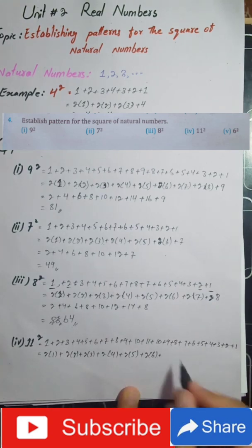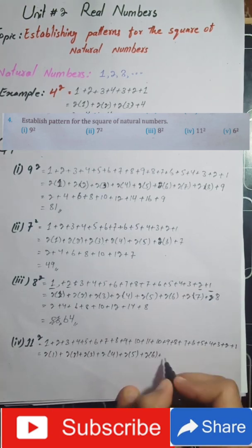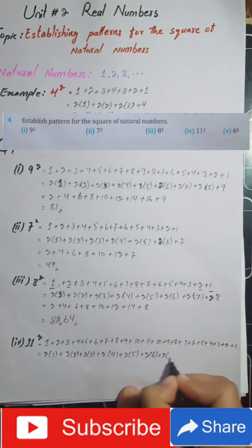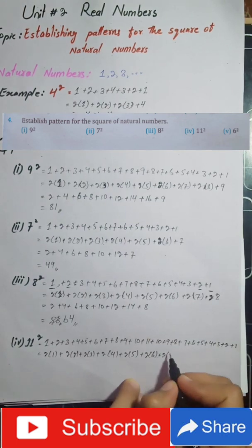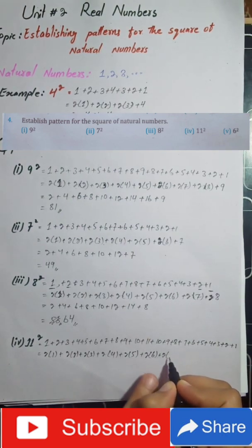These numbers each appear 2 times, therefore I am writing each of them multiplied by 2, so we will get the correct result.